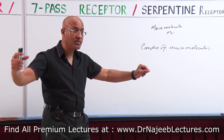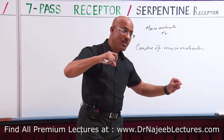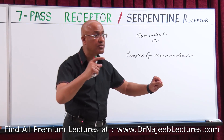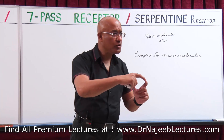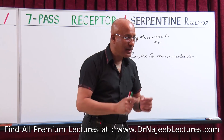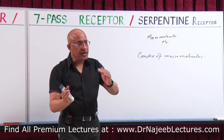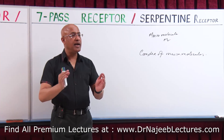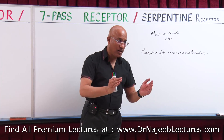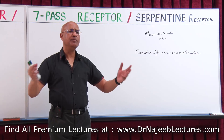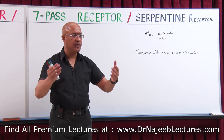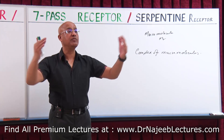Some drugs directly act on the DNA. For example, alkylating agents — anti-cancer drugs — some of them directly act on the DNA. So for those drugs, DNA itself is a receptor. That is why we have changed the definition. We now say receptors are macromolecules, which may be proteins, DNA, RNA, or any other large molecule or complex of large molecules.